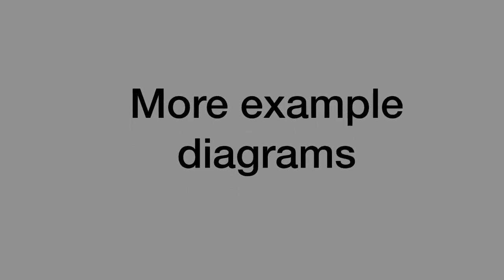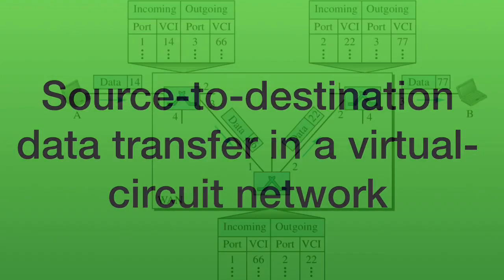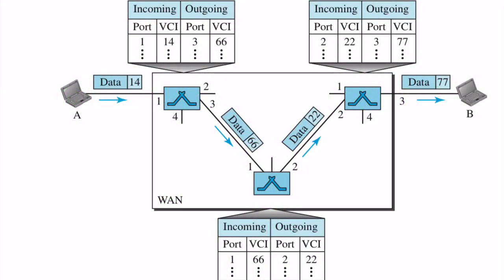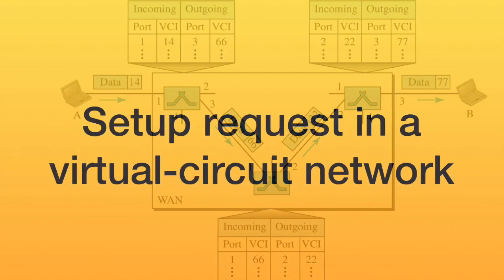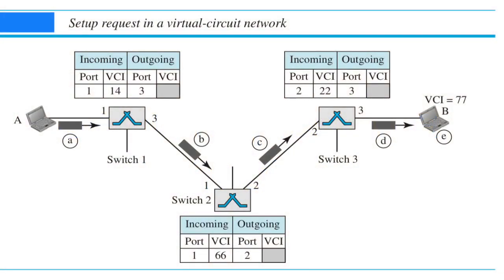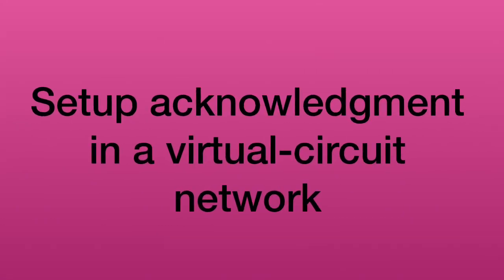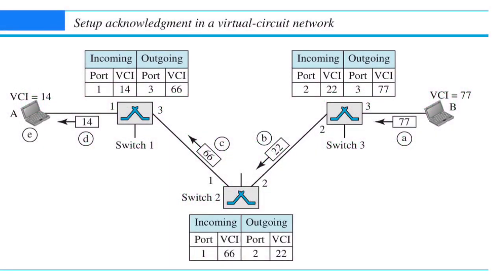Further, you have more examples to understand this concept better. This diagram shows how the data is transferred from source to destination. This diagram shows how the connection setup request is done in virtual circuit network. This diagram shows how the receiver acknowledges the setup request.